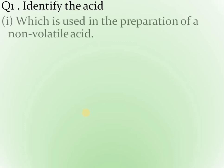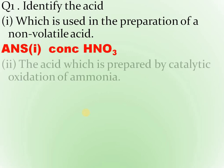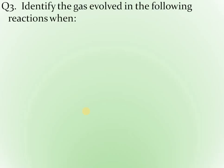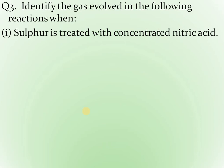Let us do some questions to check understanding. First: identify the acid used in the preparation of a non-volatile acid — the answer is H2SO4 (concentrated sulfuric acid) is the non-volatile acid used. Second: which acid is prepared by catalytic oxidation of ammonia — nitric acid, by the Oswald process. Third: cold and dilute nitric acid reacts with copper to form copper nitrate, water, and NO (nitric oxide). Fourth: sulfur treated with concentrated nitric acid — which gas is released? Nitrogen dioxide. Do not write sulfur dioxide — that is wrong; sulfuric acid is formed in this reaction.